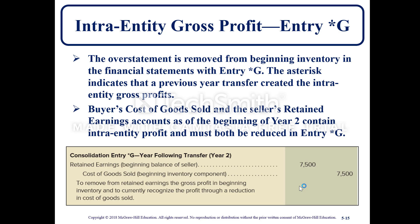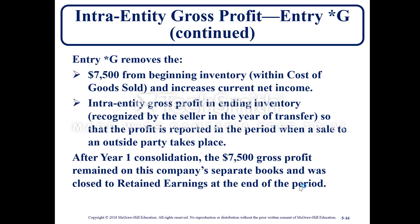Consolidation entry *G for the year following transfer — year 2 — involves debiting the retained earnings beginning balance of the seller and crediting cost of goods sold. This removes the retained earnings of the gross profit in the beginning inventory and currently recognizes the profit through a reduction in cost of goods sold. Entry *G removes the $7,500 from the beginning inventory and increases the current net income, so that the intra-entity gross profit in inventory is reported in the period when a sale to an outside party actually takes place.